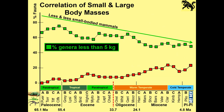If we look at a correlation of small and large body masses — plotting percent fauna of genera less than 5 kilograms, so mammals under about 11 pounds — most of the fauna is small in the Paleocene and Eocene, 60–80%. In the Miocene it drops down to about 50, as you might expect. Most mammals are small — bats, rodents — they make up most of the mammals, even today.